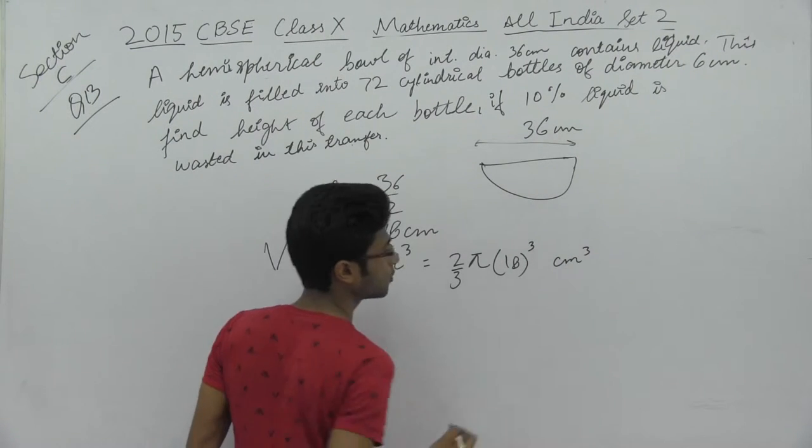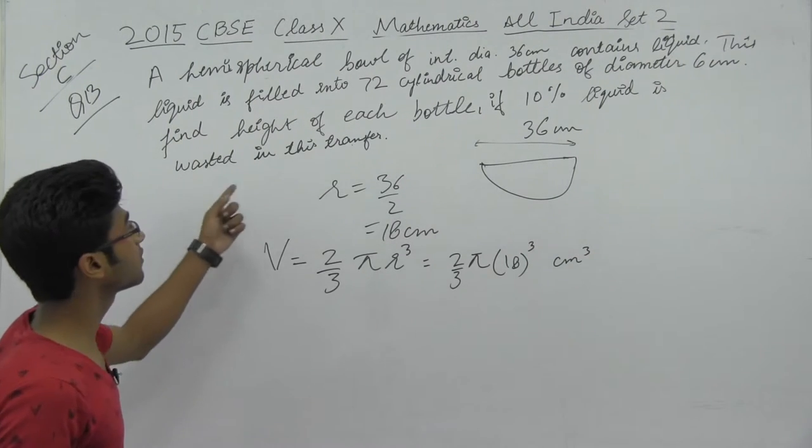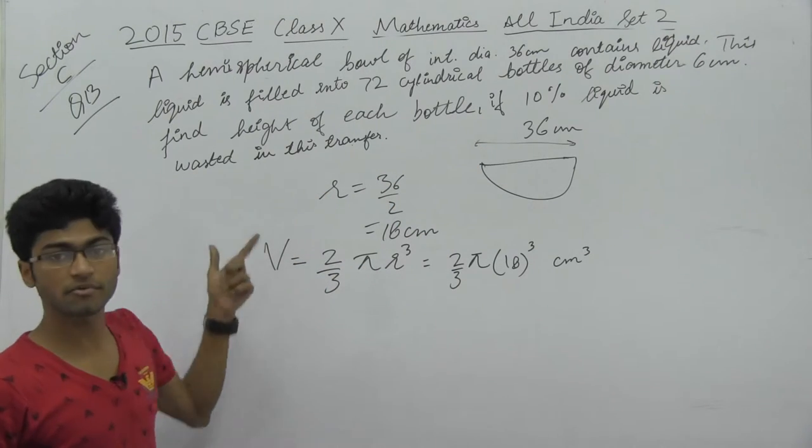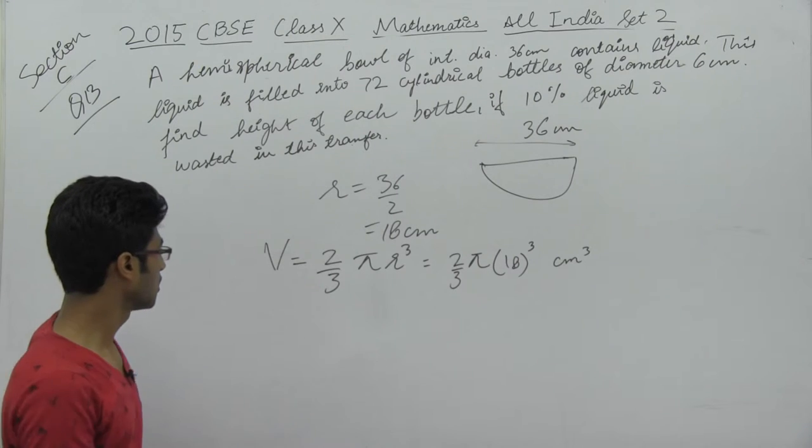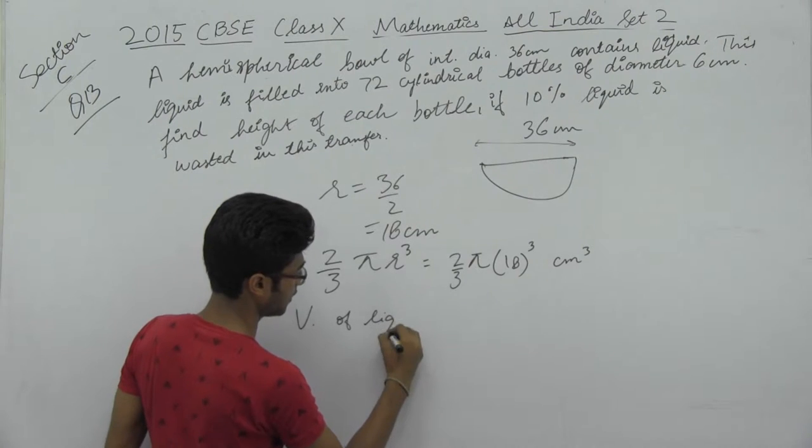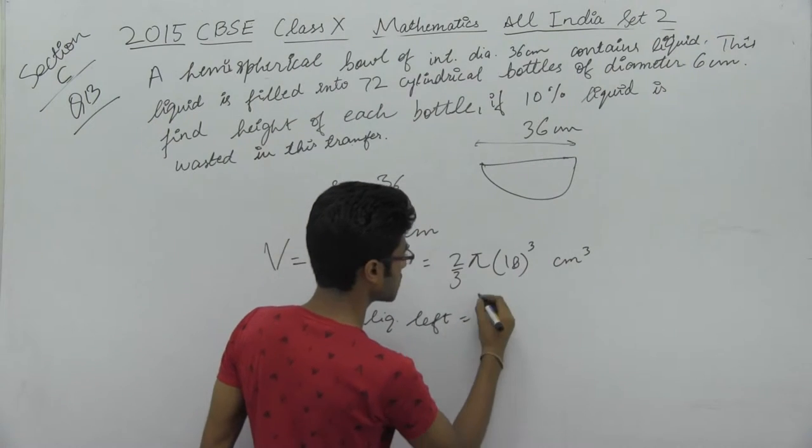This is the volume of liquid. We're given that 10% of liquid is wasted in the transfer. So we need to find the final volume of liquid after wastage.